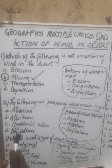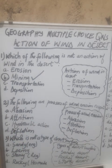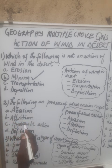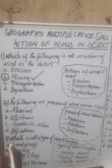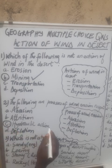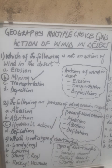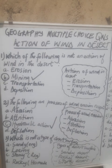Now we will see which one is not a process of wind erosion. Ablation — it's a process. Attrition — it's a process. Hydraulic action. Deflation. The correct answer is C, hydraulic action, because hydraulic action is not a process of wind erosion but a process of river erosion.